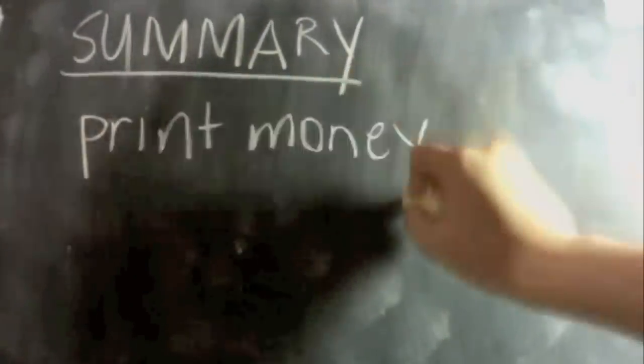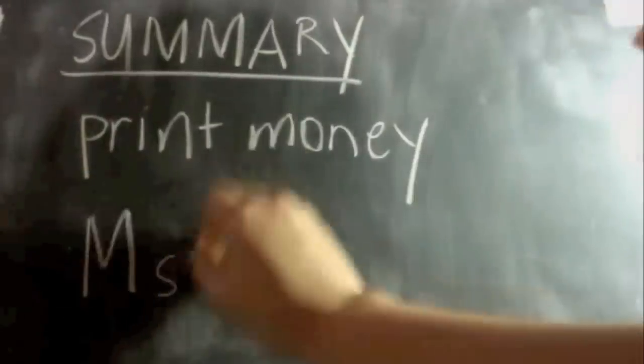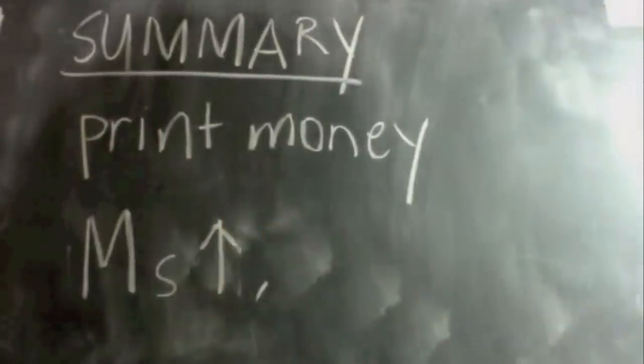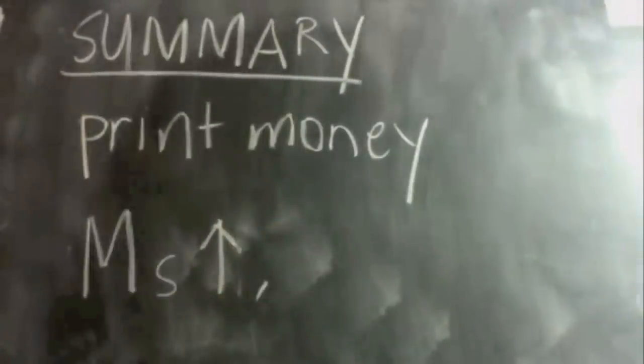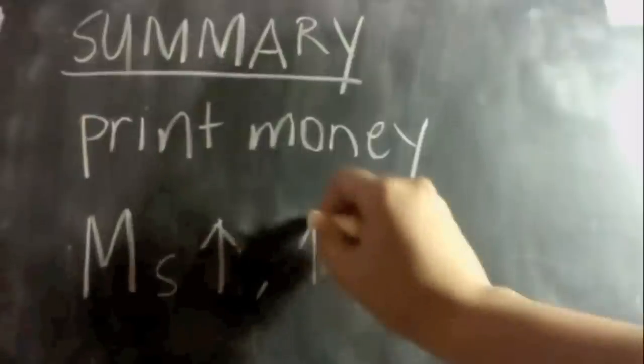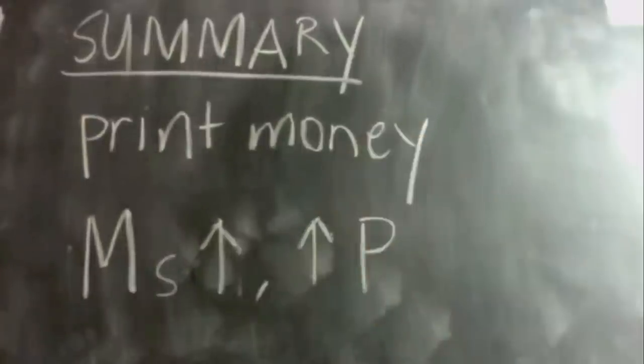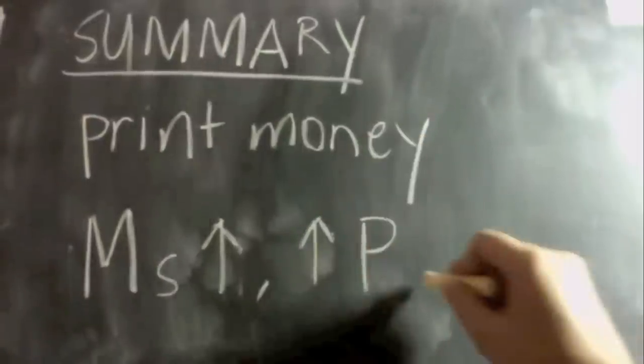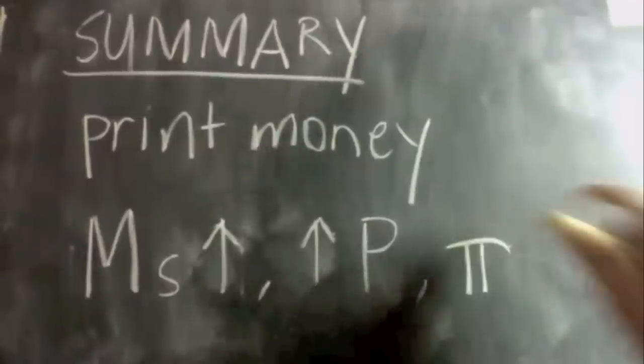To summarize our lesson for today on seniorage: Seniorage is the ability of the government to print money. In printing more money, you also increase your money supply, and increasing your money supply will result in an increase in your prices, which then leads to inflation.